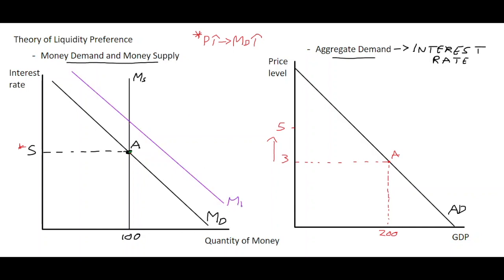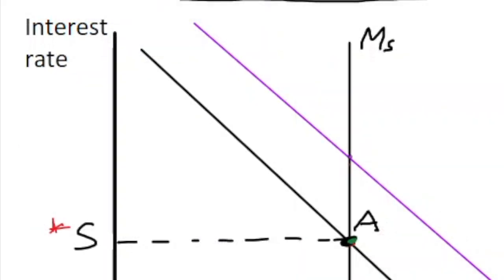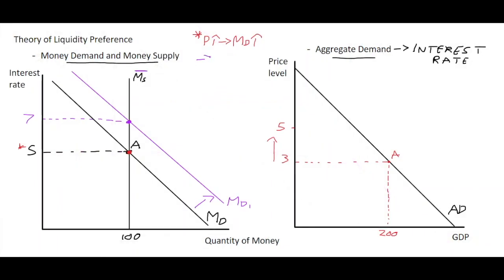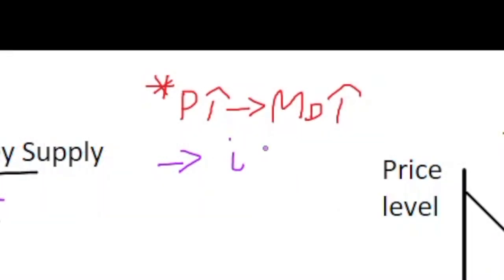With money demand shifting to the right, the impact this has on the economy is that, everything else the same, when money demand increases and money supply is assumed to stay constant, the interest rate in the economy should rise, let's say up to 7% here.